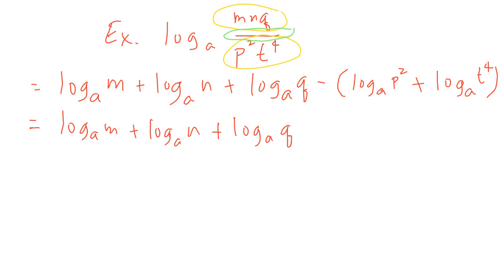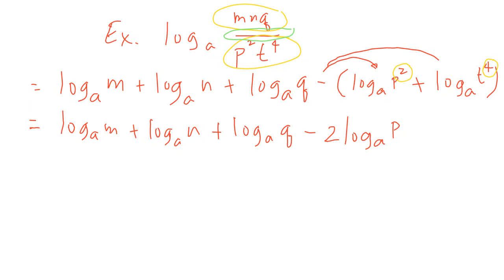Copying everything and distributing the minus sign: there's a power of 2 on p, so we bring that to the side of the log. A negative times a positive becomes negative, giving us minus 2 log base a of p. Then for t to the power of 4, we also apply the power property. A negative times a positive gives minus 4, so we bring down the power: minus 4 log base a of t.